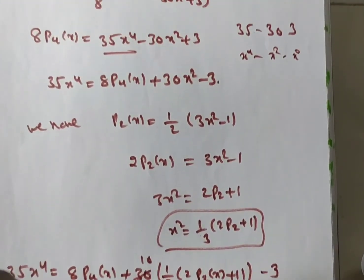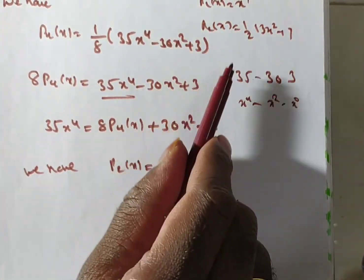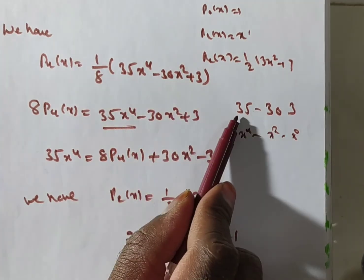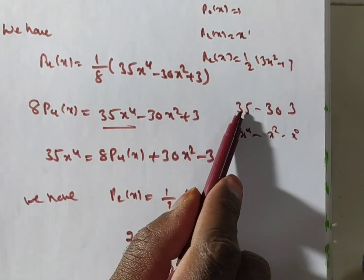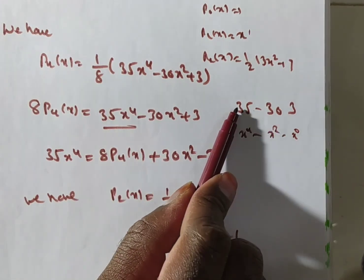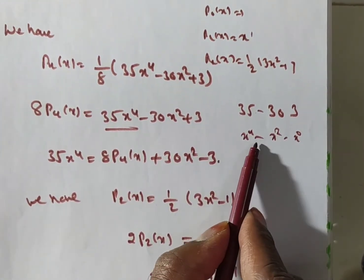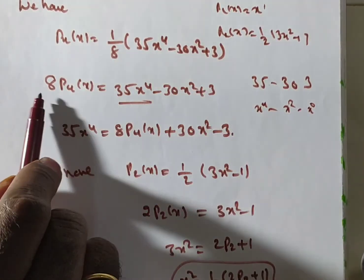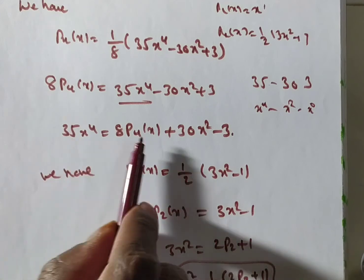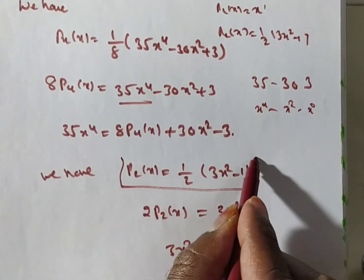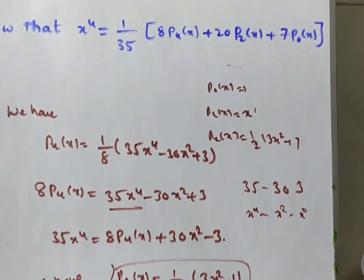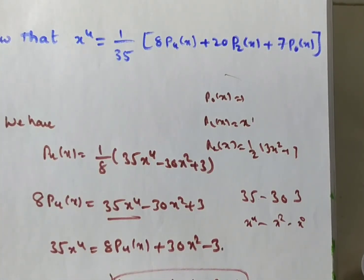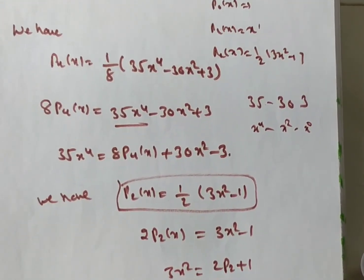Friends, what you need to remember: just remember P₀ through P₄ values. For P₄, remember the coefficients 35 and 3, with the first term x⁴, then x², then x⁰ with alternate signs. Isolate the x⁴ term, then express x² using P₂(x), and you can do it very easily. Similarly, you can find x³, x^(1/2), x⁶, and like this every polynomial can be expressed. Thank you for watching this video.